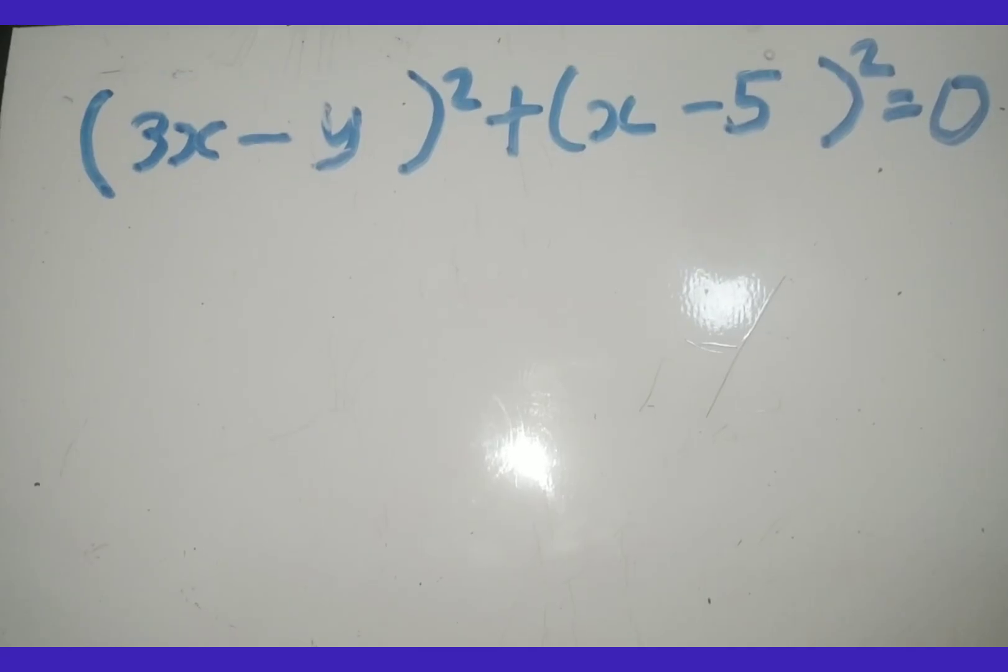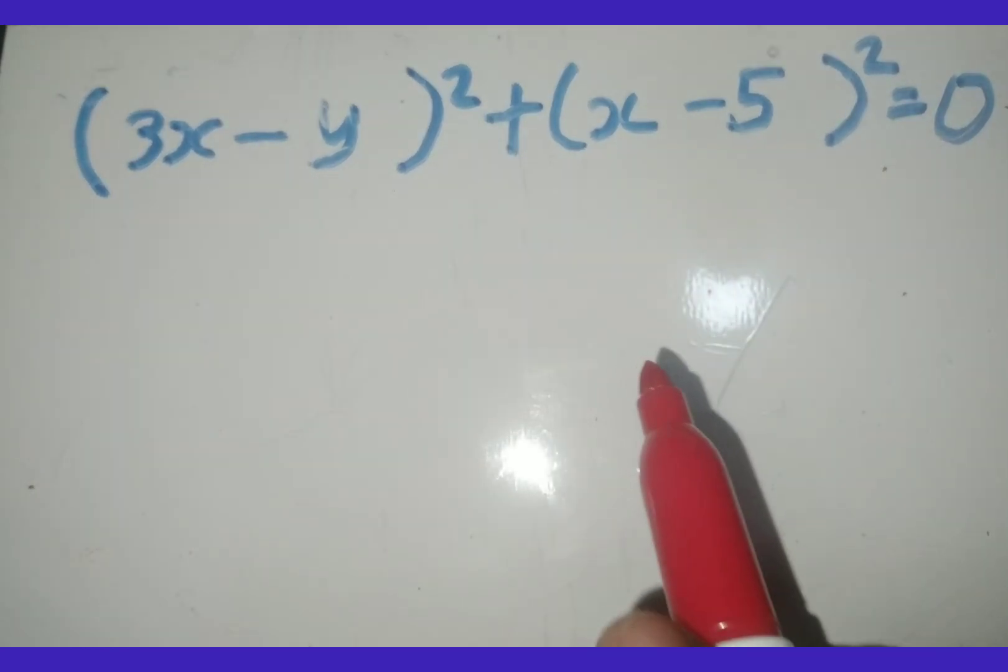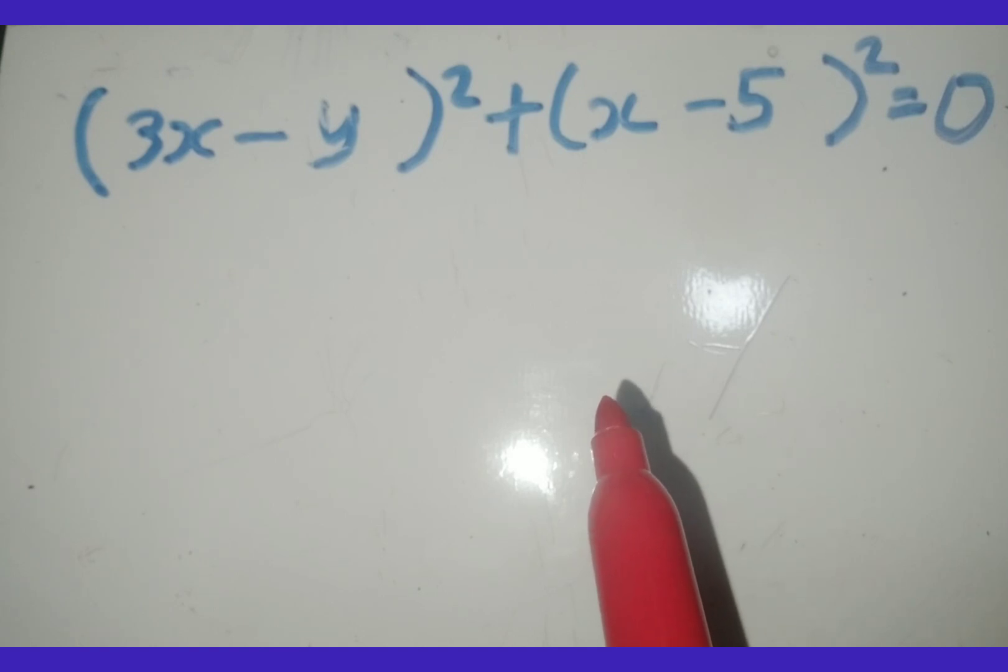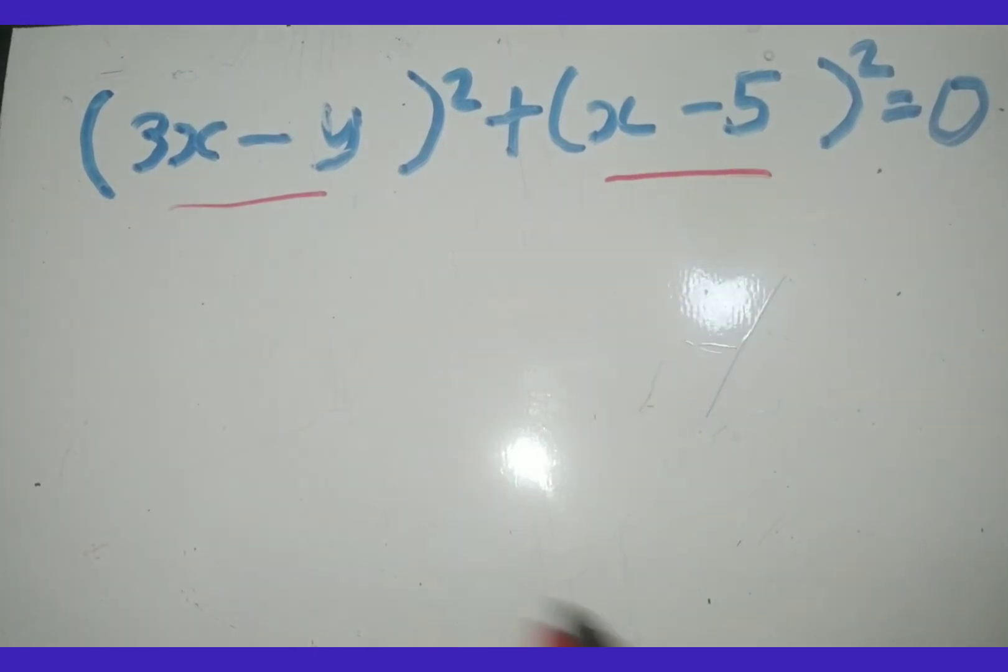In other words, if I've got two squares adding, the only way for me to get 0 in mathematics is for this to be 0 and this to be 0, not one of them to be 0. Both of them must be 0.